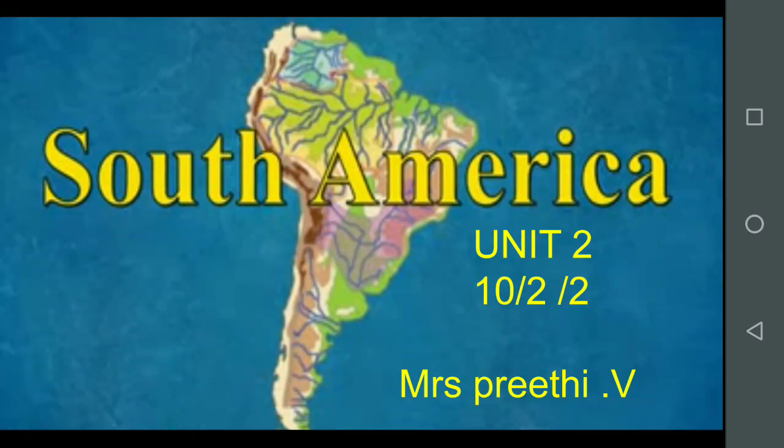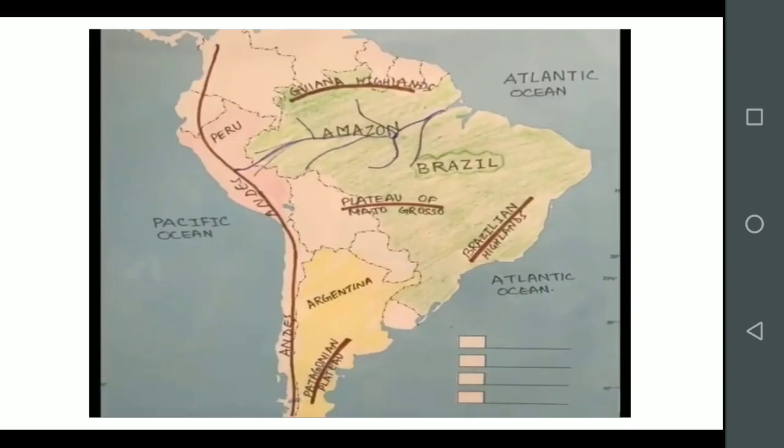There are four physical features. They are the West Coastal Plains, the Andes Mountains, the Central Plains and the Eastern Highlands. The West Coastal Plains are narrow plains lying between the Andes and the Pacific Ocean in the western part of the continent. This coastal plain extends along the entire length of the continent and its width varies.